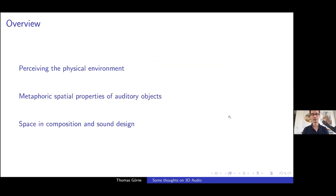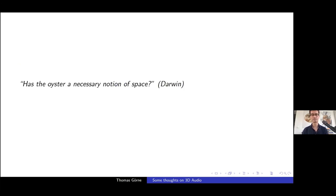So what I'm going to talk about briefly is three topics. Number one, how we perceive the environment, the three dimensional auditory environment, and how we recreate it by technical means. Then about some metaphoric spatial properties of sound. And then finally, a very short look onto what this might mean for composing in space. Starting with this beautiful quote, Charles Darwin: has the oyster a necessary notion of space, likely not because space does not have a specific meaning in the life of oysters there, I guess, but it does have in our lives.